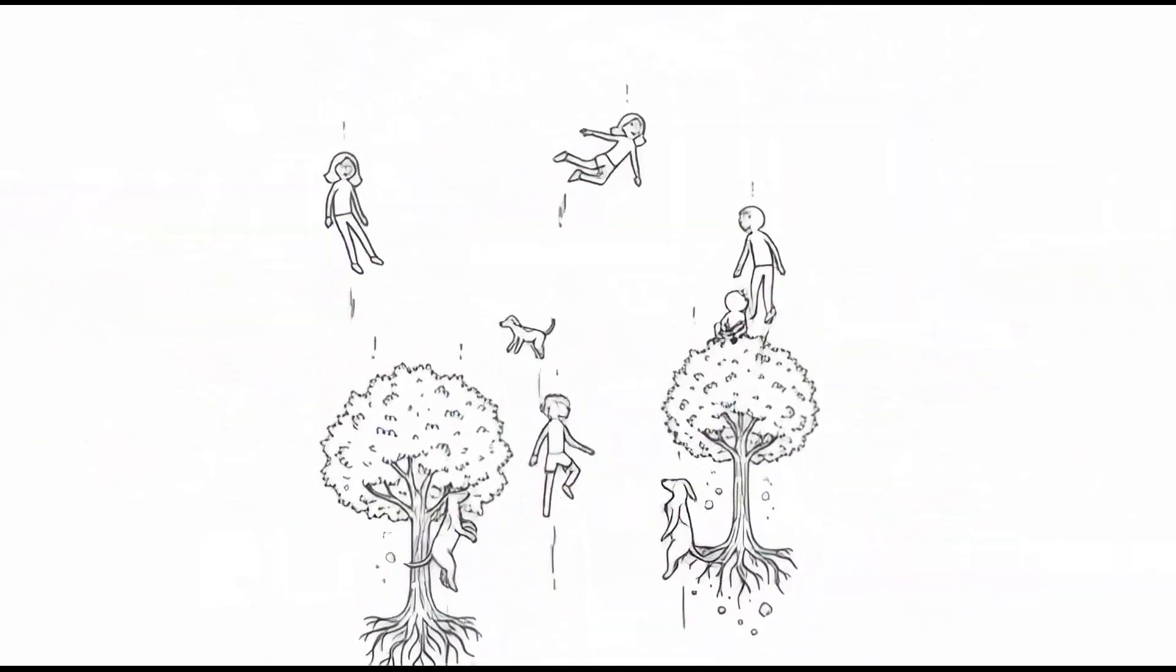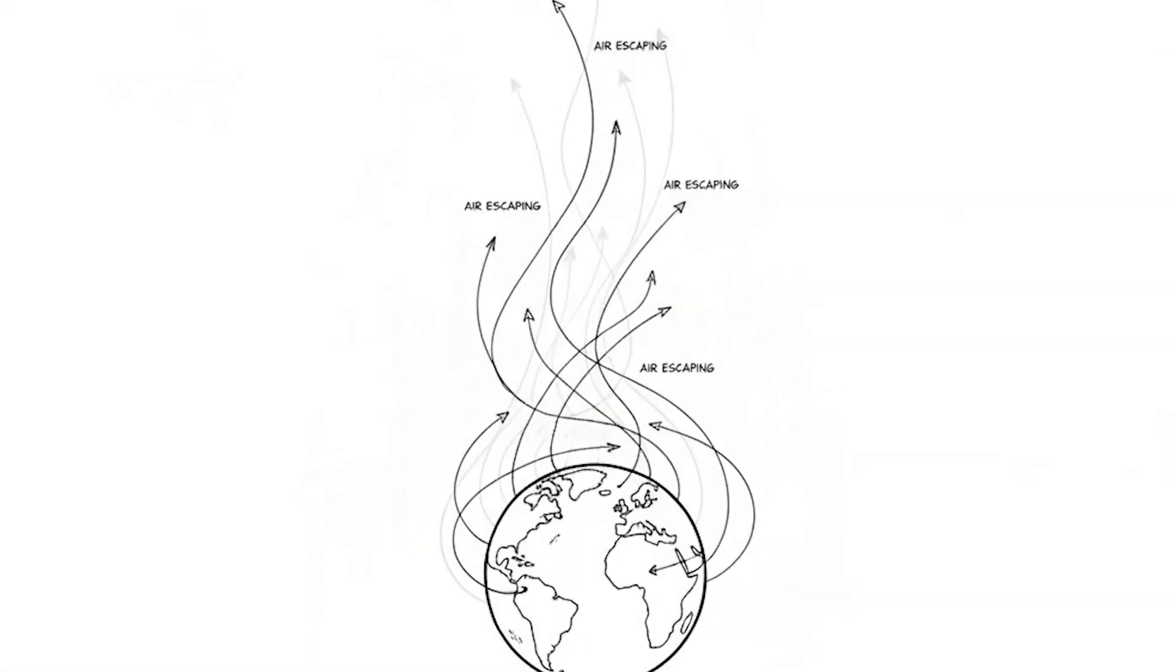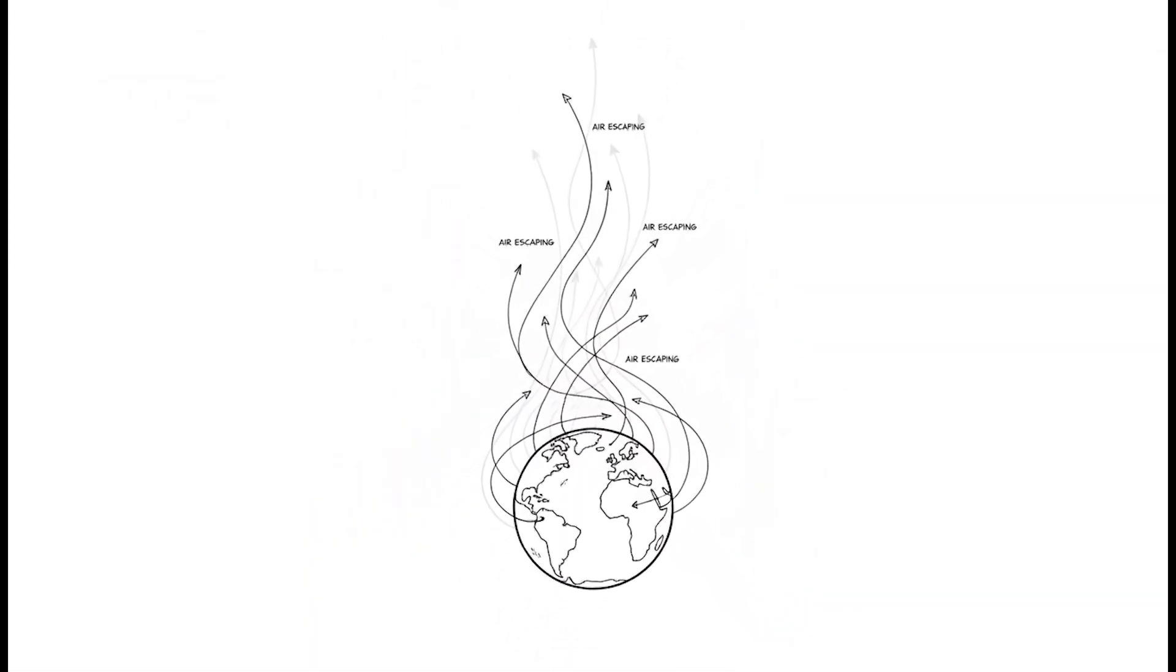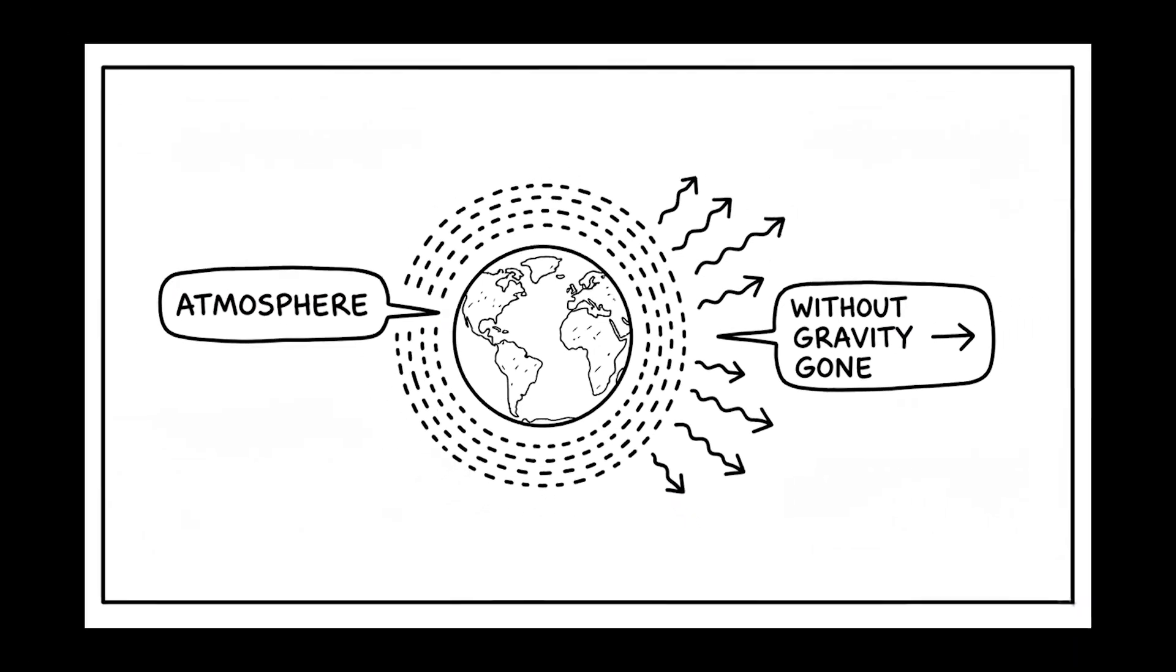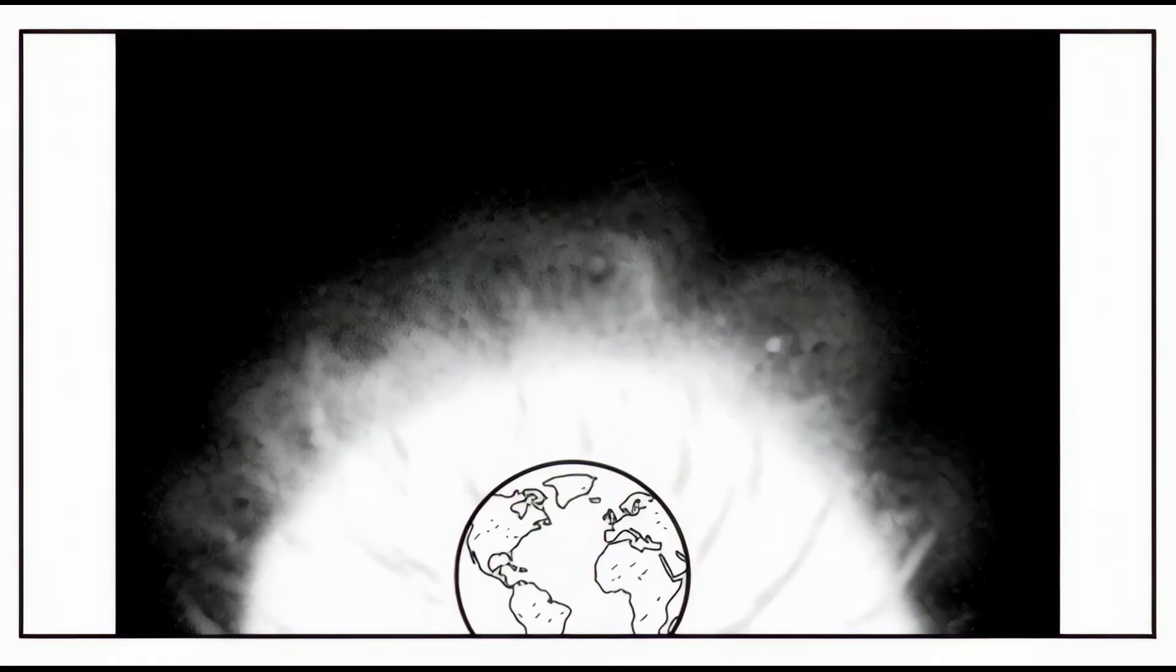Dogs, trees, people, all pulled upward by nothing. And even the air itself starts escaping. Because gravity is what keeps our atmosphere from leaking into space. Without it, the air just leaves.